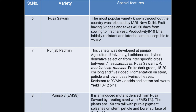Punjab 8, also called EMS 8, is an induced mutant derived from Pusa Sawani by treating seeds with EMS at 1%. The plants are 150 cm tall with purple pigment splashes on stem, petiole and lower surface of the leaf.